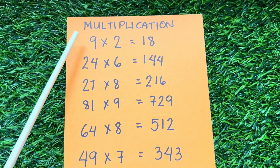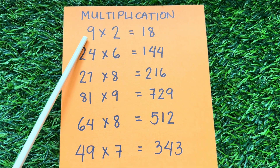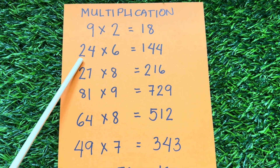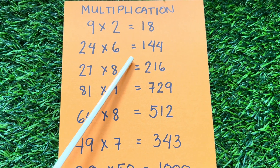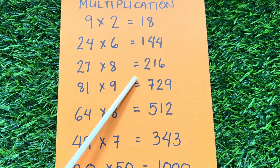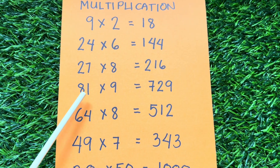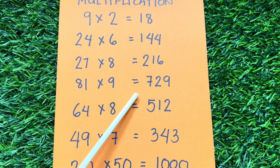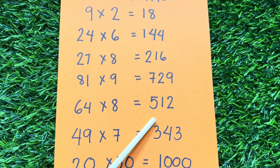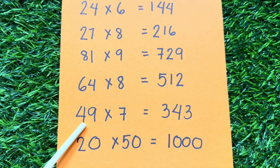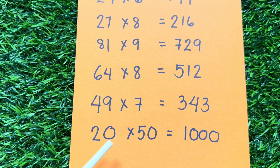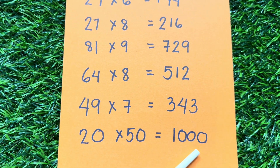Let's learn multiplication. 9 times 2 is equals to 18. 24 times 6 is equals to 144. 27 times 8 is equals to 216. 81 times 9 is equals to 729. 64 times 8 is equals to 512. 49 times 7 is equals to 343. 20 times 50 is equals to 1,000.